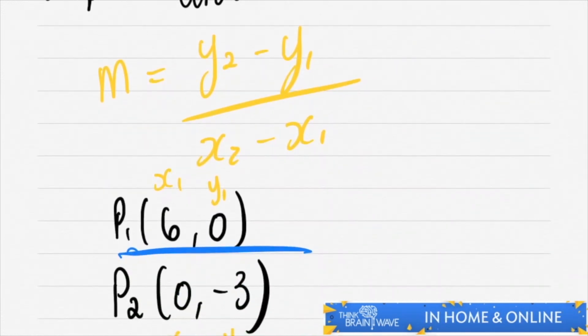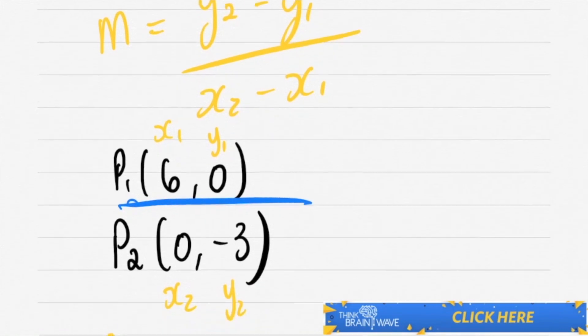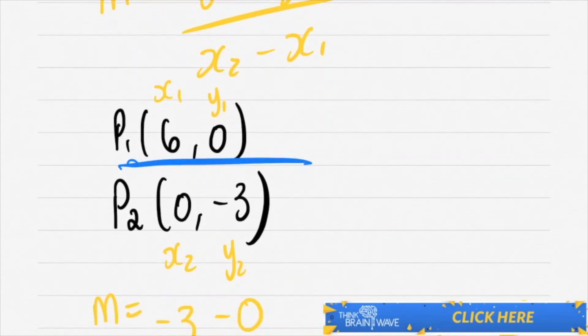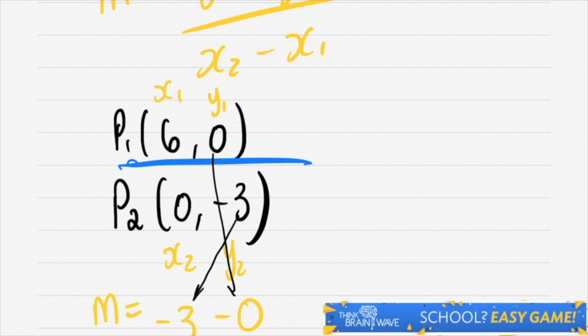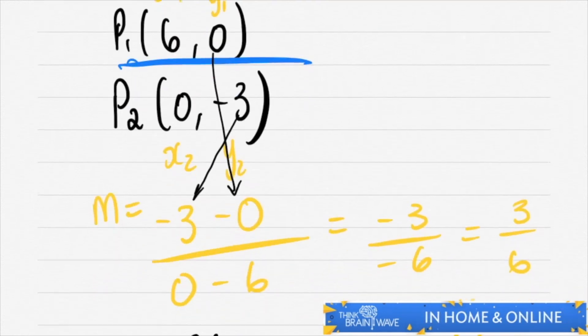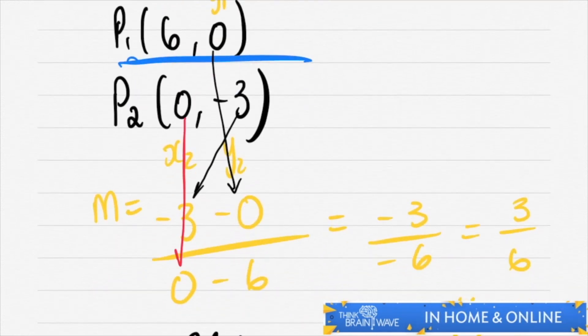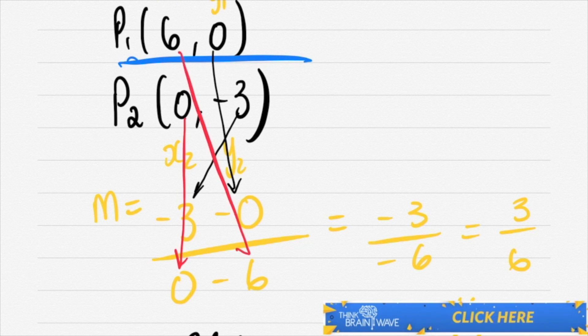You've got two points. You've got (6, 0) and (0, -3). You sub in your minus three first, then your zero second. You then do your zero and then your six.